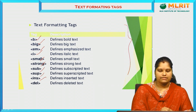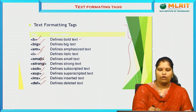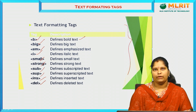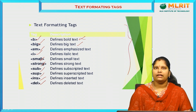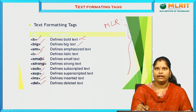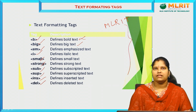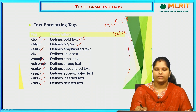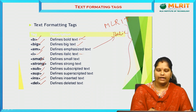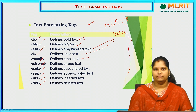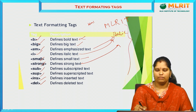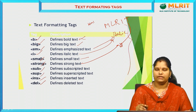The text formatting tags also include ins (inserted text) and del (deleted text). If you want to insert content in bold, use the bold tag or big tag. Using the emphasize tag prints text in italic, same as the i (italic) tag. The small tag displays text in a smaller size.